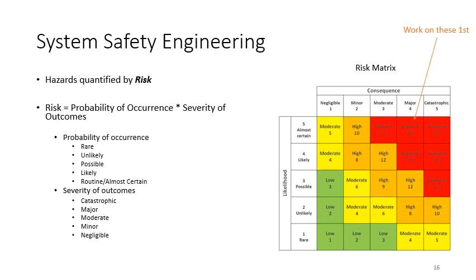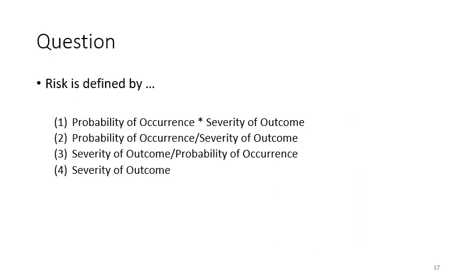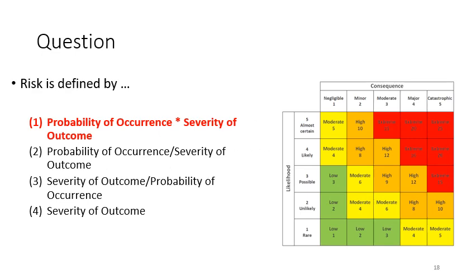The risk matrix provides a way to integrate likelihood and consequence and determine the measure of risk for each combination. In the design process, you want to work on the red ones first — start with anything in the extreme, try to solve those, then move into the orange and yellow, and finally eliminate as many of the green as possible. Question: Risk is defined by which one of these four options? The correct answer is that you multiply the probability of occurrence times the severity of outcome, also shown in the chart as likelihood times consequence.